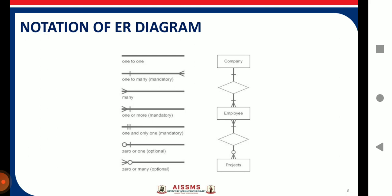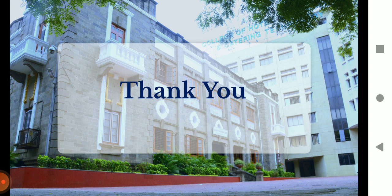These are the notations used for ER diagrams: one-to-one, one-to-many, many-to-one, one or more, one and only one, and zero or one. In an ER diagram, entities are shown in rectangular brackets, relationships are shown in diamond brackets. Thank you.